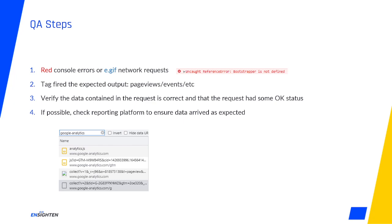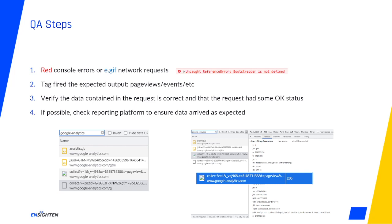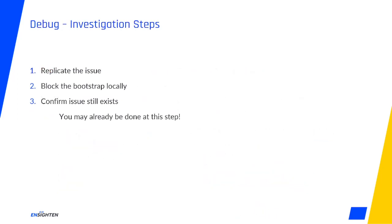If you're certain that the request went out, check that the data inside of it is correct and that the request received something like a 200 OK status. Finally, if you have access, check reporting platforms to ensure that data arrived as expected. That's QA done.